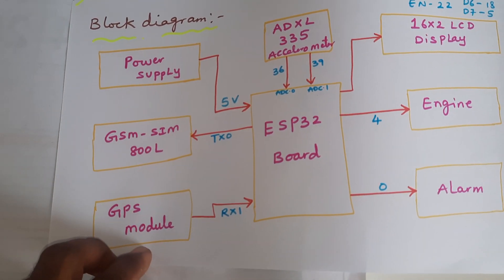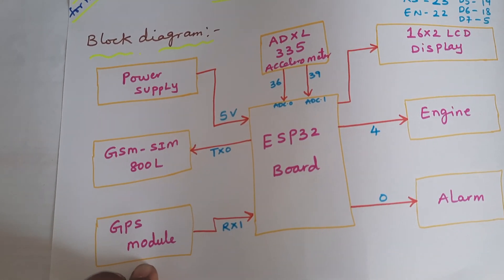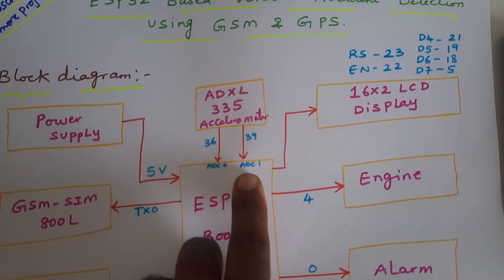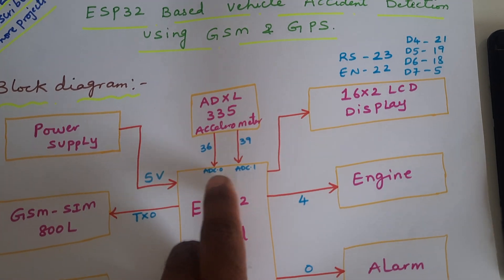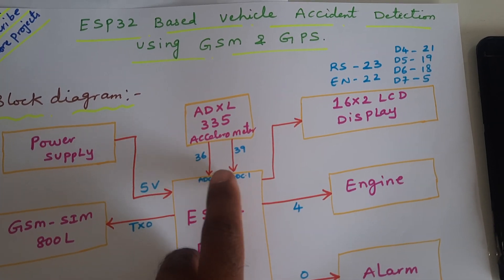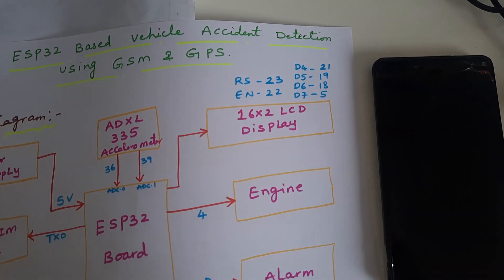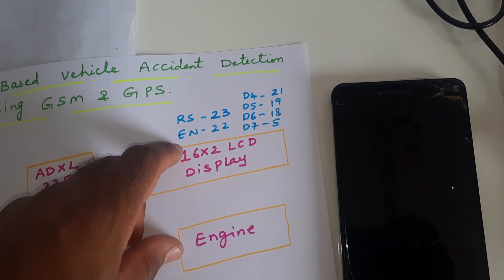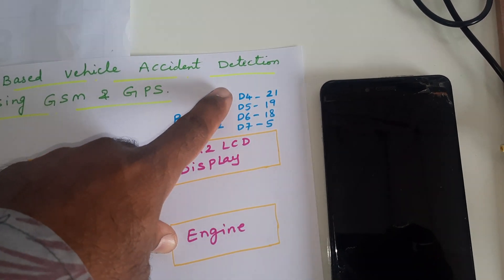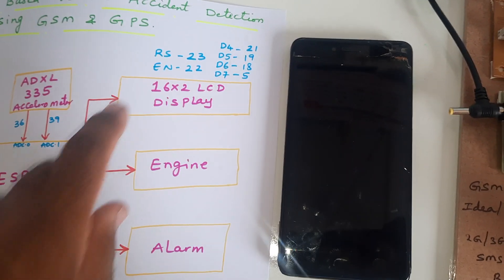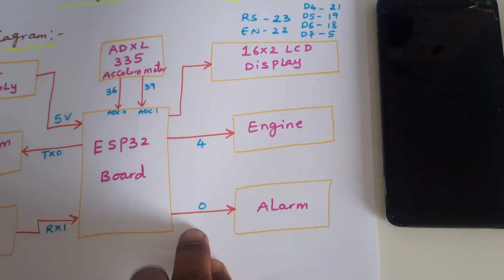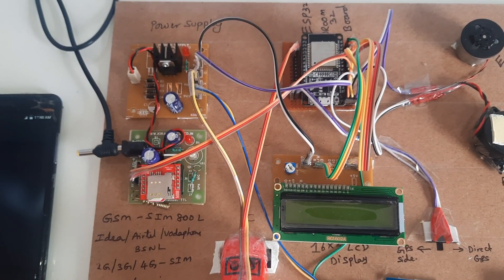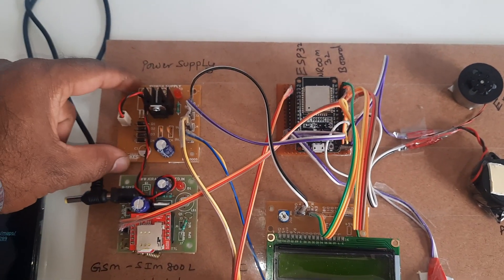We are also using the GPS module GY, the ADXL335 MEMS accelerometer sensor — those are connected with ADC0 and ADC1 on pins 36 and 39. The 16x2 LCD display is connected with RS, Enable, D4, D5, D6, D7 on pins 23, 22, 21, 19, 18, 5. We are using a 5-volt power supply module.